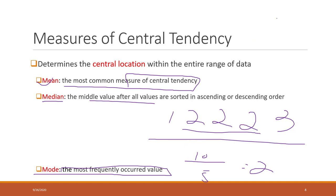The median: you just sort the values. In this case we have 5 values — 1, 2, 2, 2, 3 — and the one in the middle is the median, which is also 2. So the mean, median, and mode are all 2 in this example.